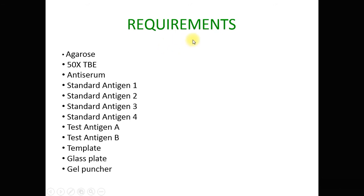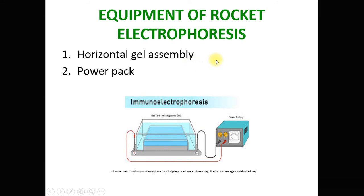The requirements for this technique are agarose, TBE buffer, antiserum, and standard antigens. The kit shown here consists of four standard antigens, test antigen A, test antigen B, a template, glass plate, and gel puncher. The equipment used for rocket electrophoresis is a horizontal assembly, similar to that used for agarose gel electrophoresis in DNA electrophoresis. A second requirement is that of the power pack.